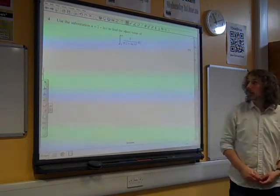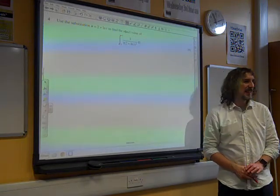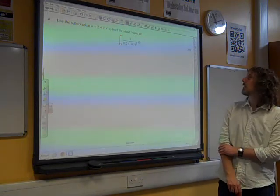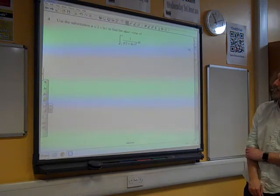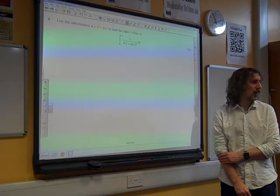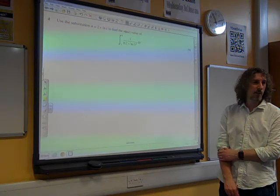Okay. We did say there was going to be a substitution question. Use the substitution u = 2 + ln t to find the exact value of the integral from 1 to e of 1 over t(2 + ln t)² dt.